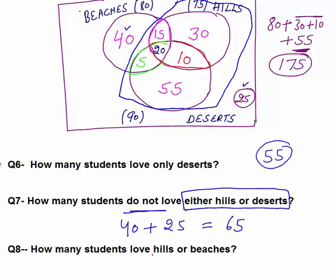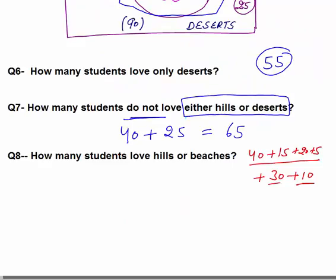Question 8: How many students love hills or beaches? Hills or beaches means everything in the hill and beach circles — those who love hills, those who love beaches, and those who love both. So this equals 40 plus 15 plus 20 plus 5 plus 30 plus 10, which is 120 as the final answer.